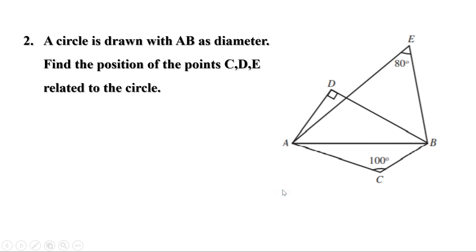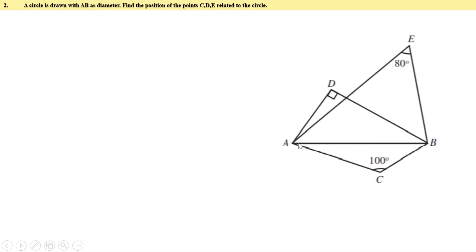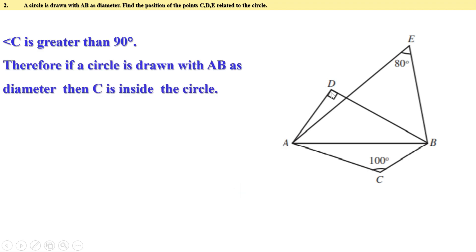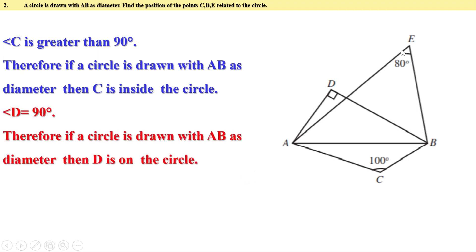Now the second problem. A circle is drawn with AB as diameter. Find the position of the points C, D, E related to the circle. We know angle C is more than 90 degrees, so the point C is inside the circle. Now angle D is 90 degrees. Therefore, the point E is outside the circle.